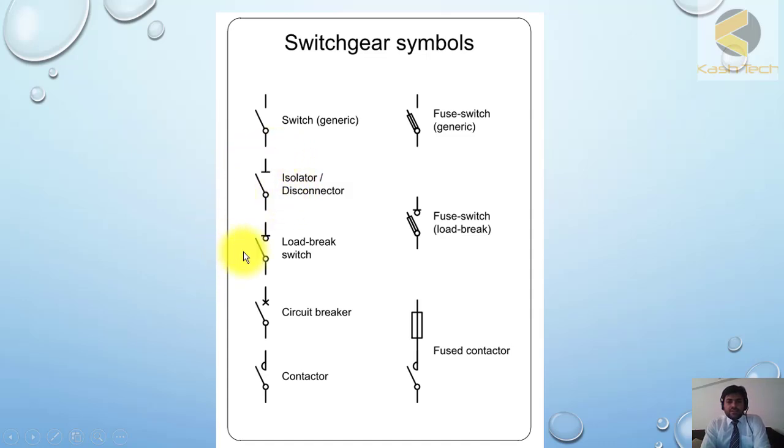This one is load break. It means you can break the current manually, but it doesn't have any sensing device which can sense high current and trip. This is circuit breaker which can break the current also. It has tripping and closing coils at 132 kV levels. This is contactor.